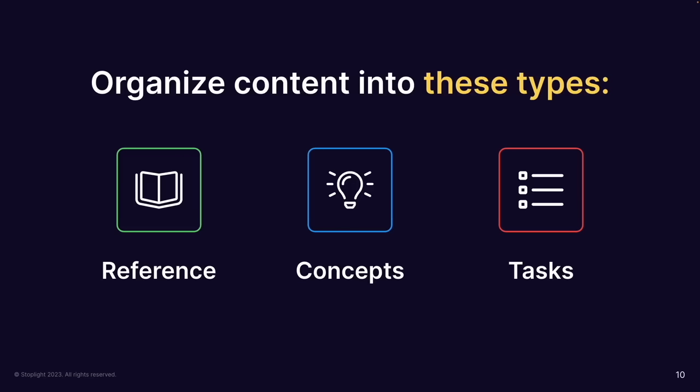If you only document an API in its reference format, you're missing the concepts — what are the things in simple terms, what does this API do? Often it's a suite of APIs with big ideas behind why you'd use them. And then there are tasks: specific steps that users need to take to accomplish something. Concepts and tasks can be a blurry line, but we'll look at examples.